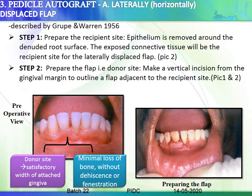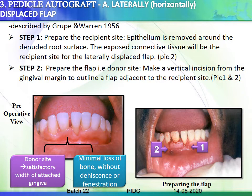The first pedicle technique is the laterally or horizontally displaced flap, first described by Grupe and Warren in 1956. To prepare the recipient site, the epithelium around the denuded root is removed. Following that, the exposed connective tissue will serve as the recipient site for the laterally displaced flap.